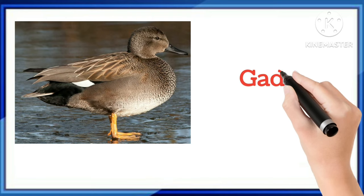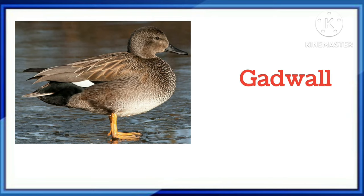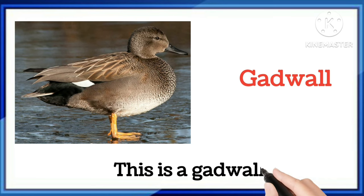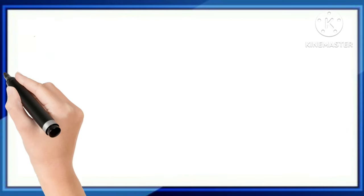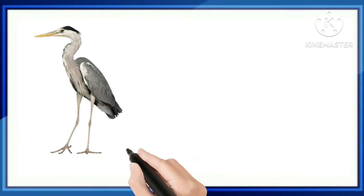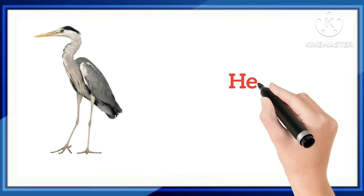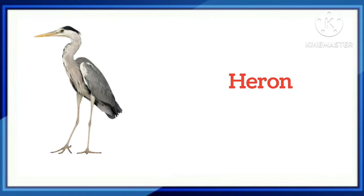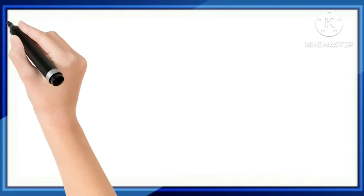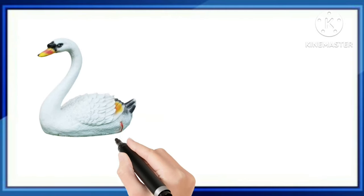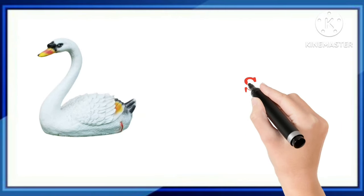And which word is this, kids? This is a cat wall. Say with me: this is a cat wall. And which word is this? This is a heron. Say with me: this is a heron.